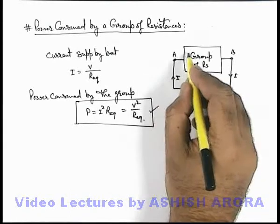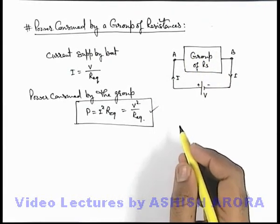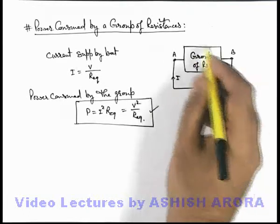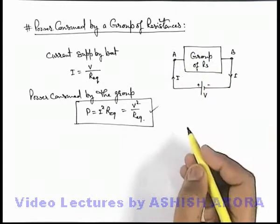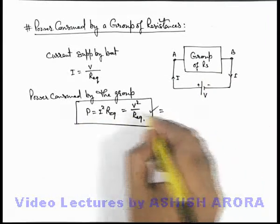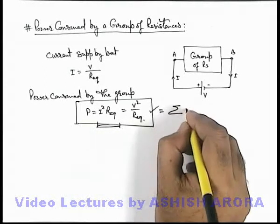But if we wish to calculate the power consumed by the individual resistance in the group, we need to calculate the current in each branch of the circuit or the group, and for individual resistance we can calculate it. And finally, the overall power which we are calculating by this method will be given by the sum of...